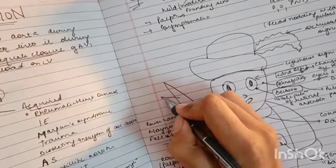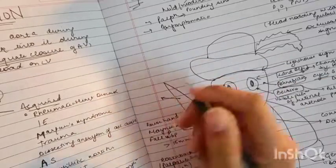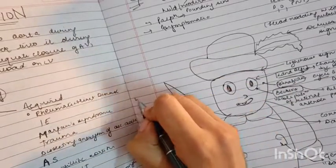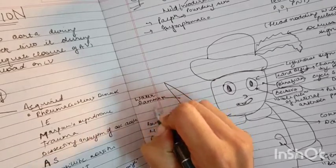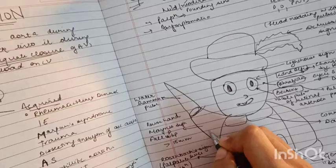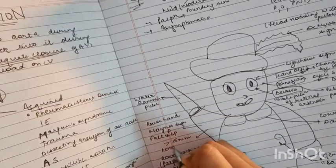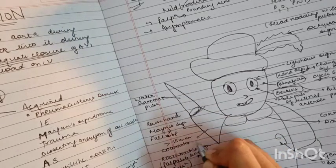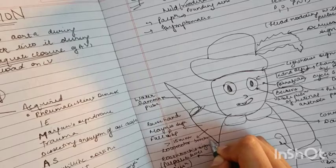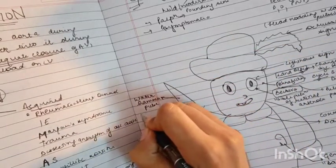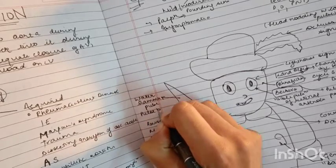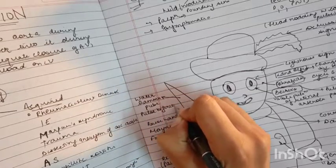This looks like a hammer. So one more characteristic feature is water hammer pulse. Here we can also write about pulsus bisferiens and corrigan pulse.